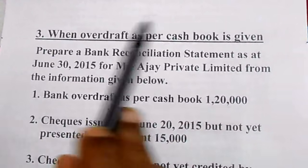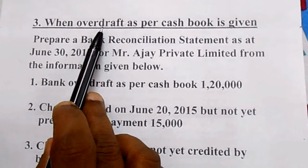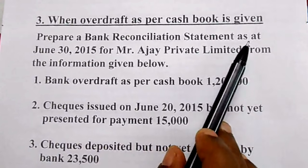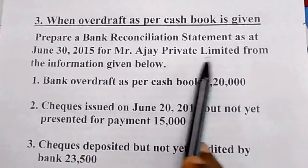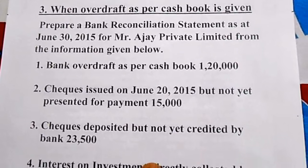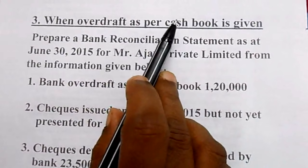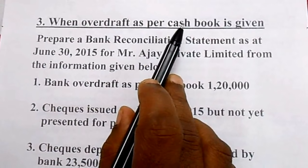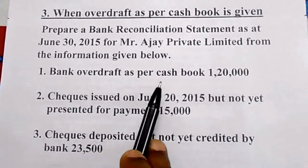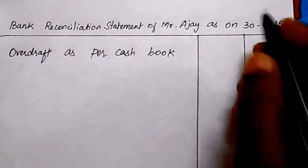The third situation: when overdraft as per cash book is given. Overdraft means excess of withdrawal over deposit — an unfavorable balance. From the information given, prepare a bank reconciliation statement as at 30th June 2015 for Mr. Ajay Private Limited. Bank overdraft as per cash book is Rs. 1,200,000 — a negative value. You start with this unfavorable balance and need to add or subtract items to find the balance as per pass book.